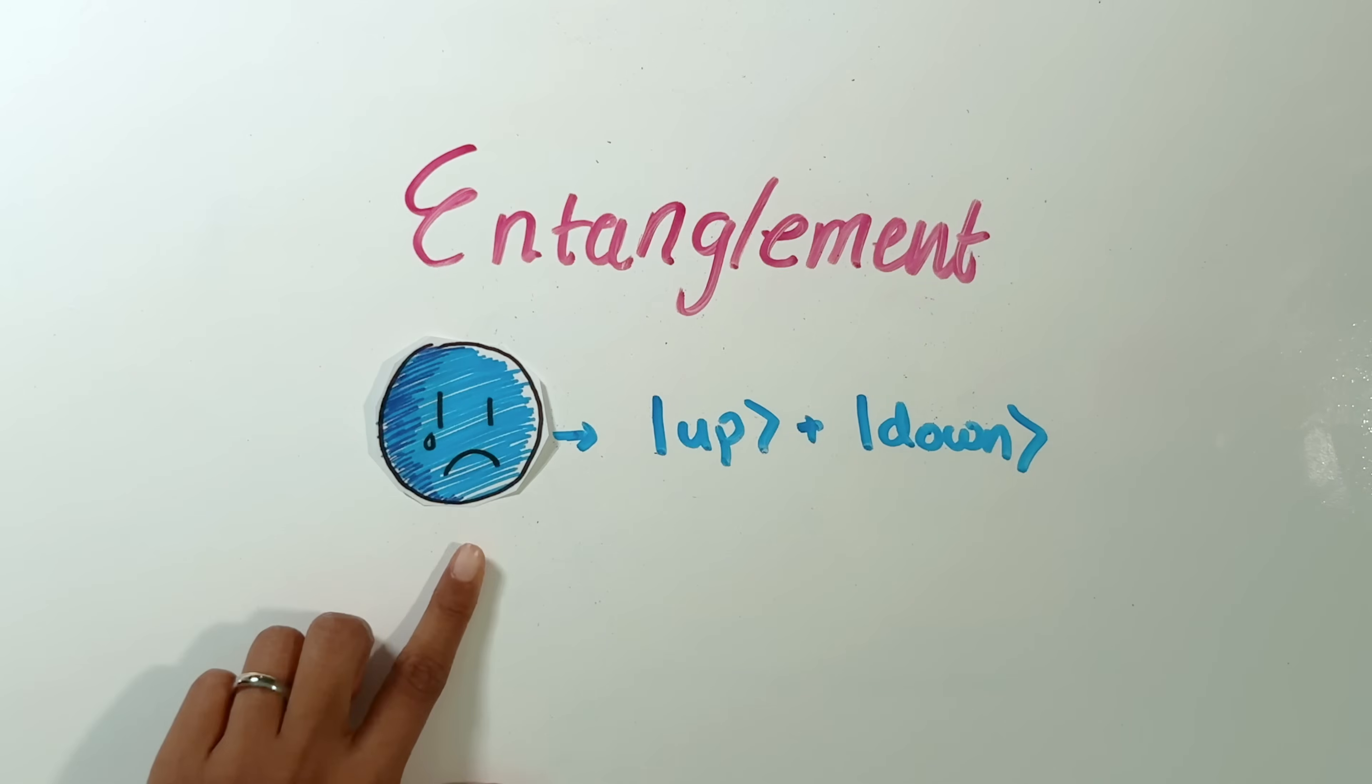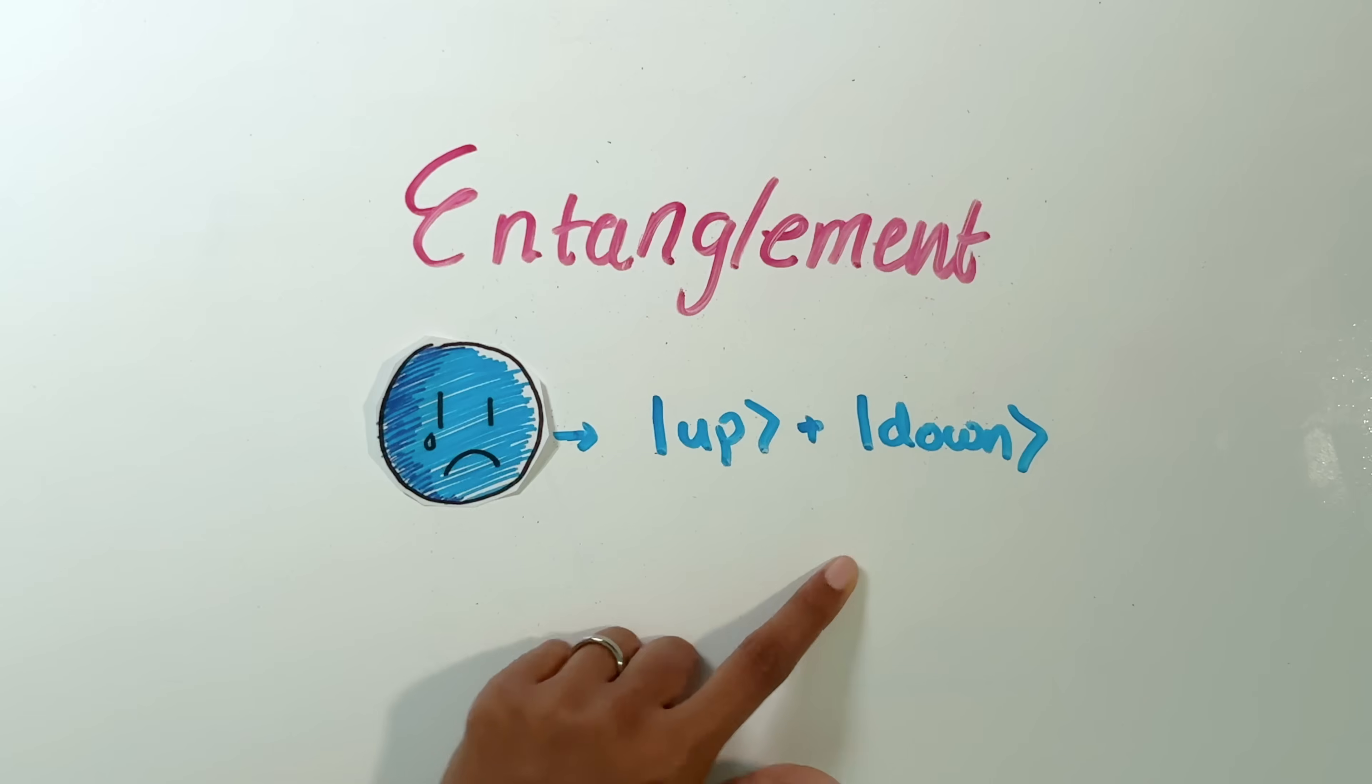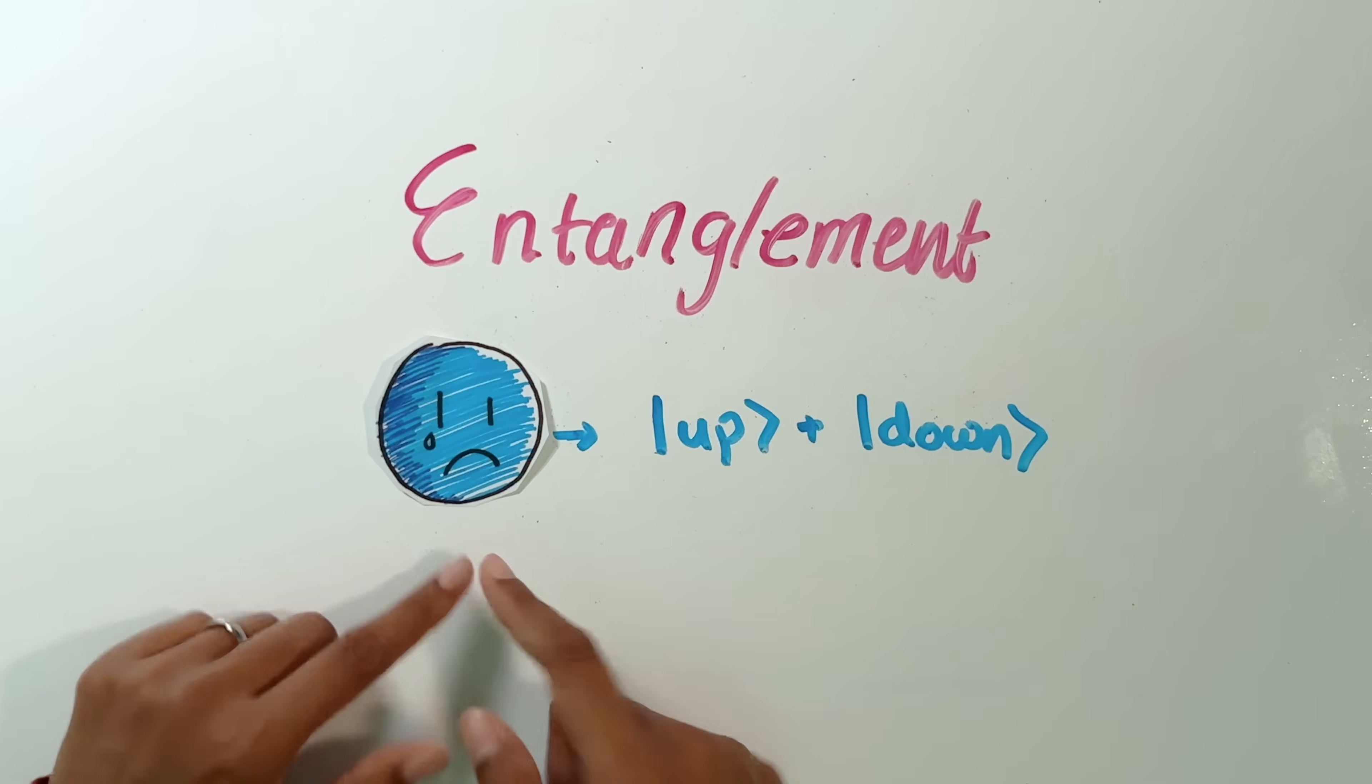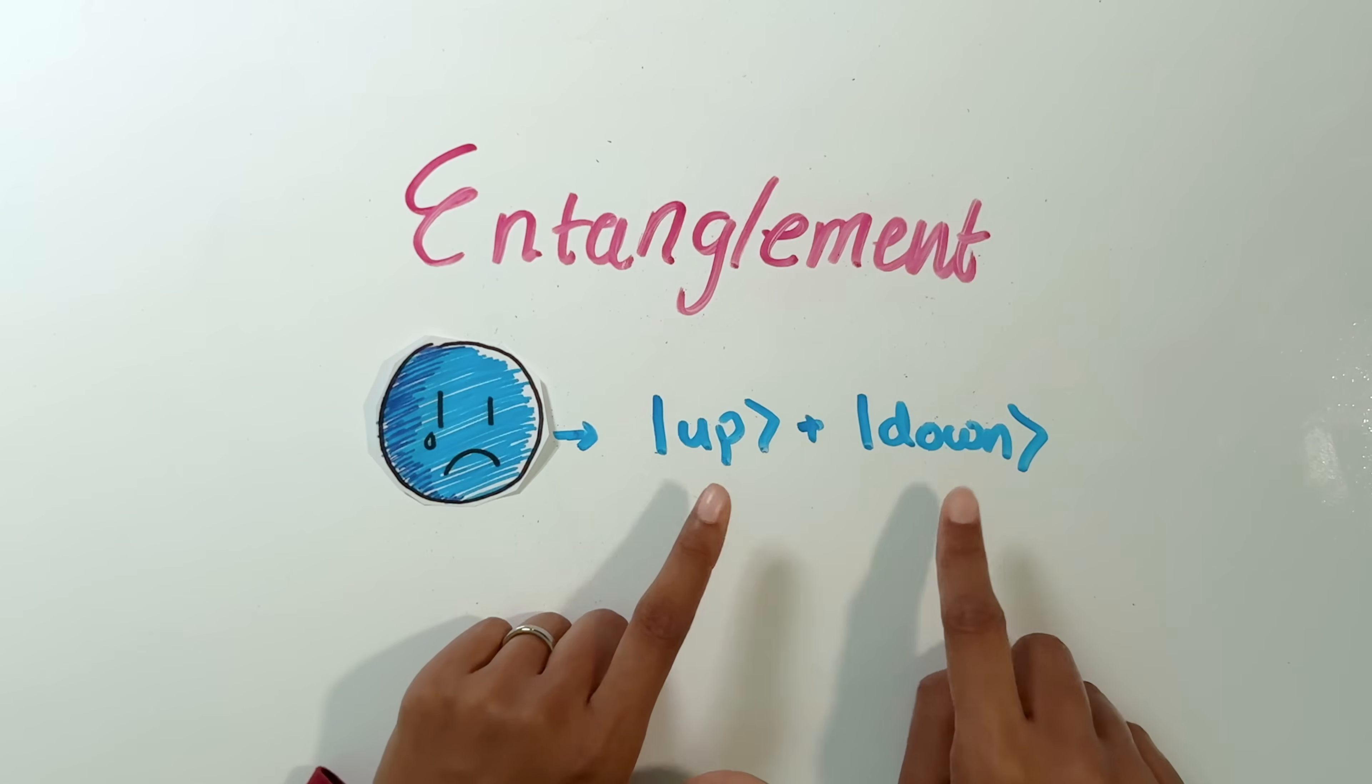So the reason the coin was in that state of heads or tails was because we had some amount of uncertainty. But with this quantum state, it is not because of uncertainty that we have this superposition. In fact, we know exactly what the state is. It is truly a superposition of up and down. So for the rest of this video, we're going to assume that we have no classical uncertainty.